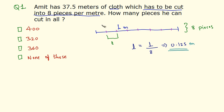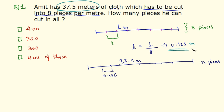The cloth is now 37.5 meters. He has to cut it into n pieces, and that's what we have to find. The length of each piece is 0.125, so we can write n equals 37.5 divided by 0.125.